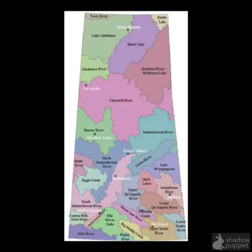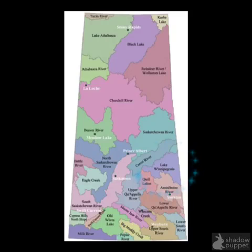Porcupine Plain is part of the Lake Winnipegosis watershed. Essentially, as water flows in Saskatchewan or in Porcupine, it flows into Manitoba and into the major basin of Lake Winnipegosis.